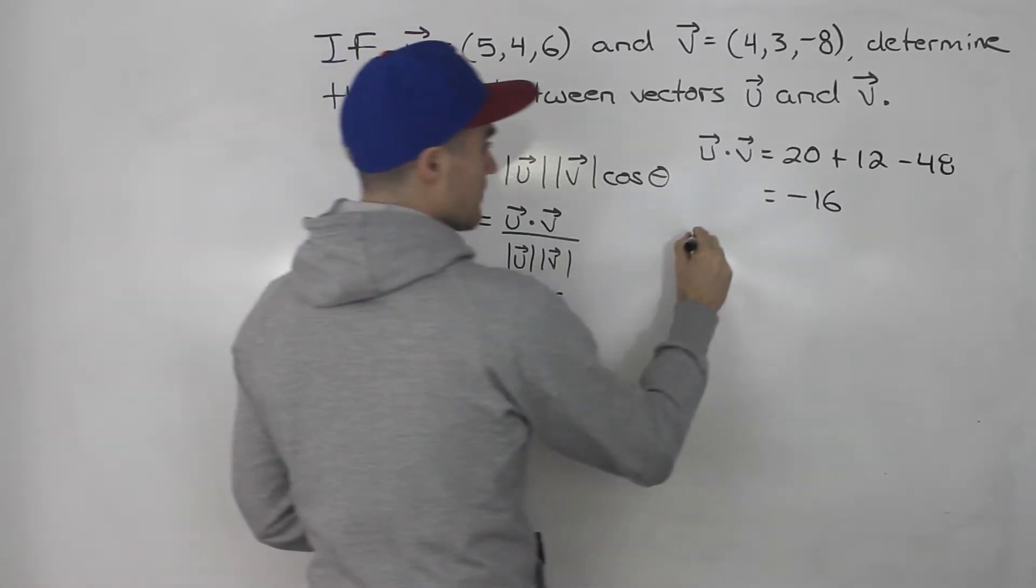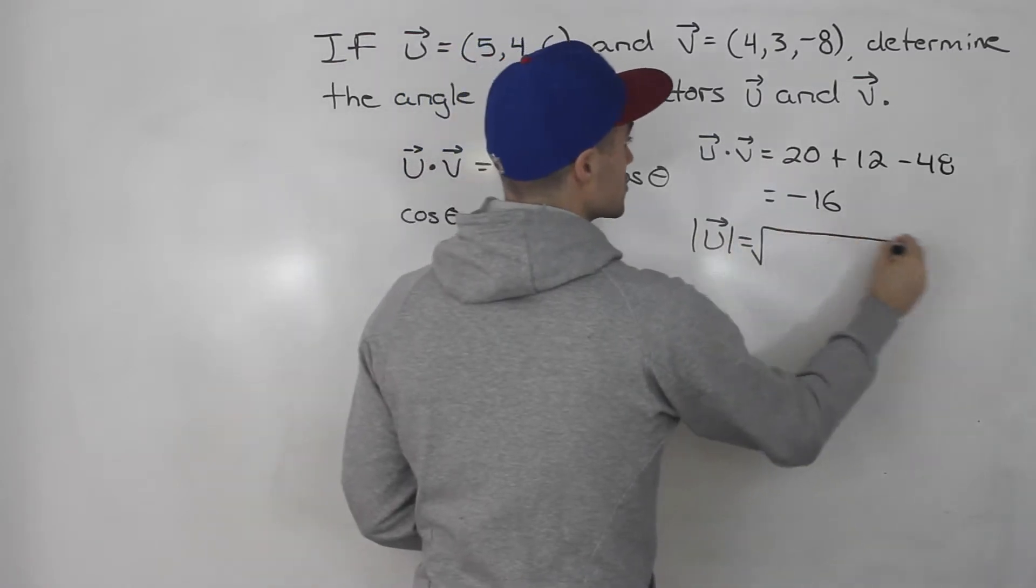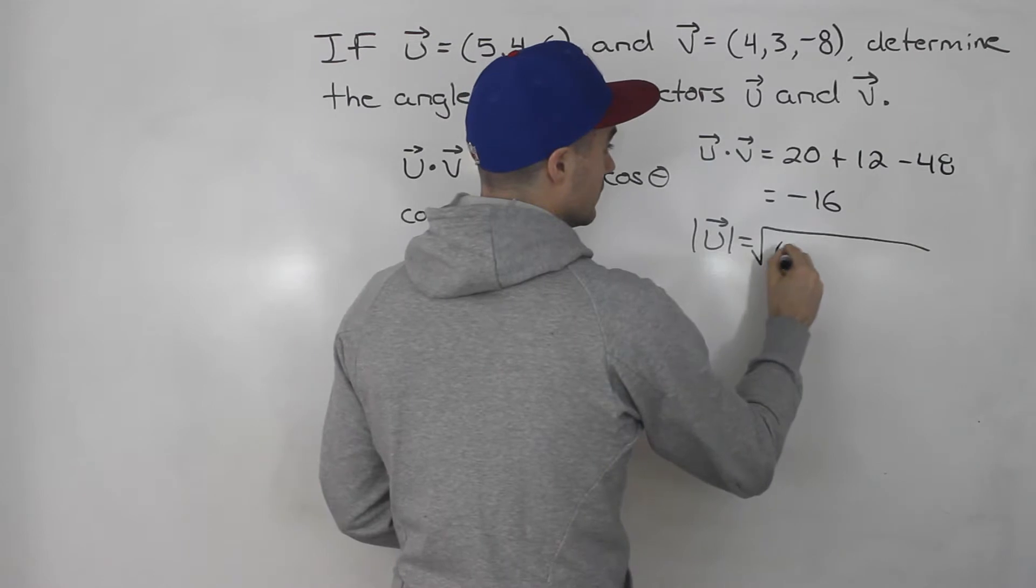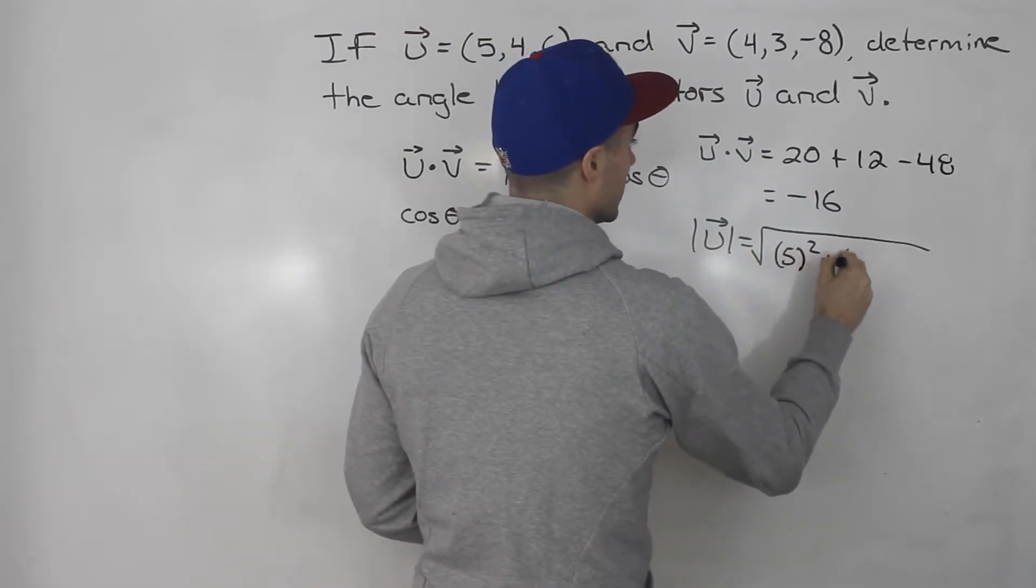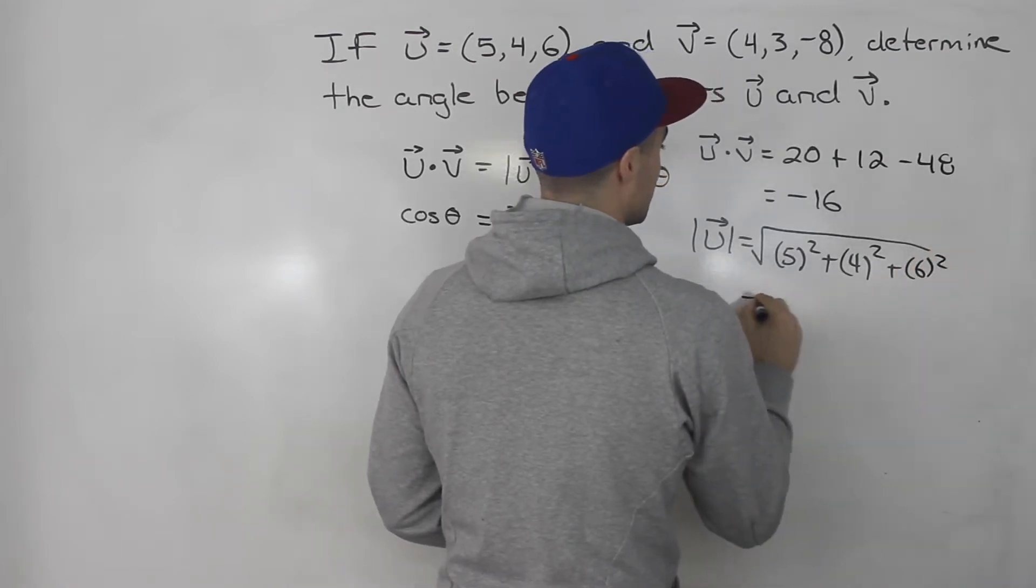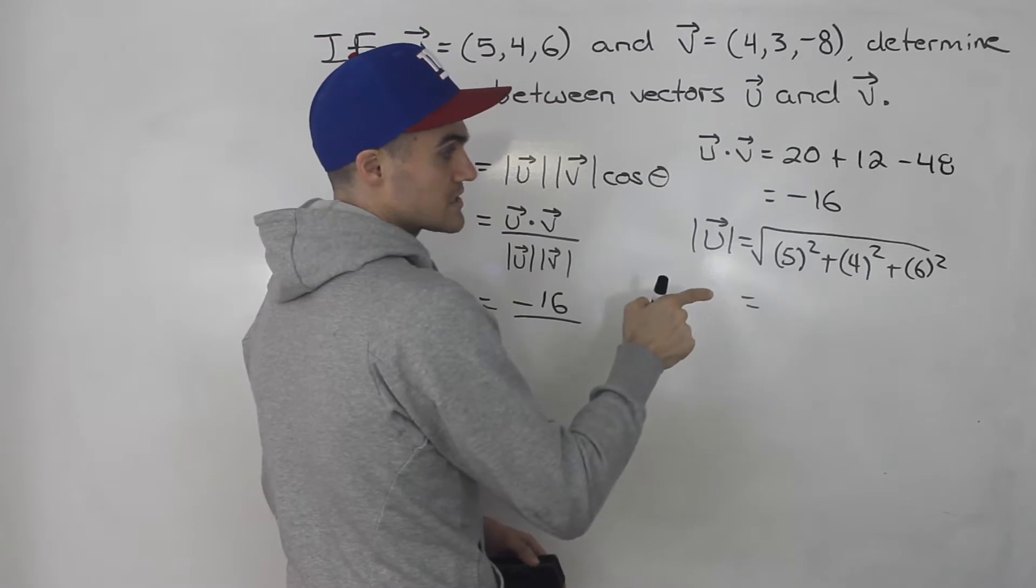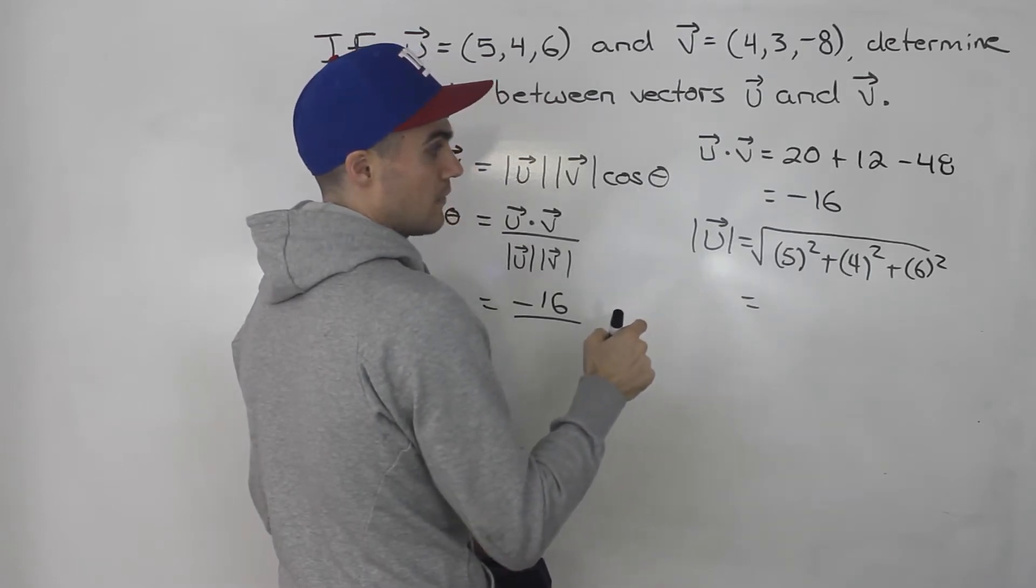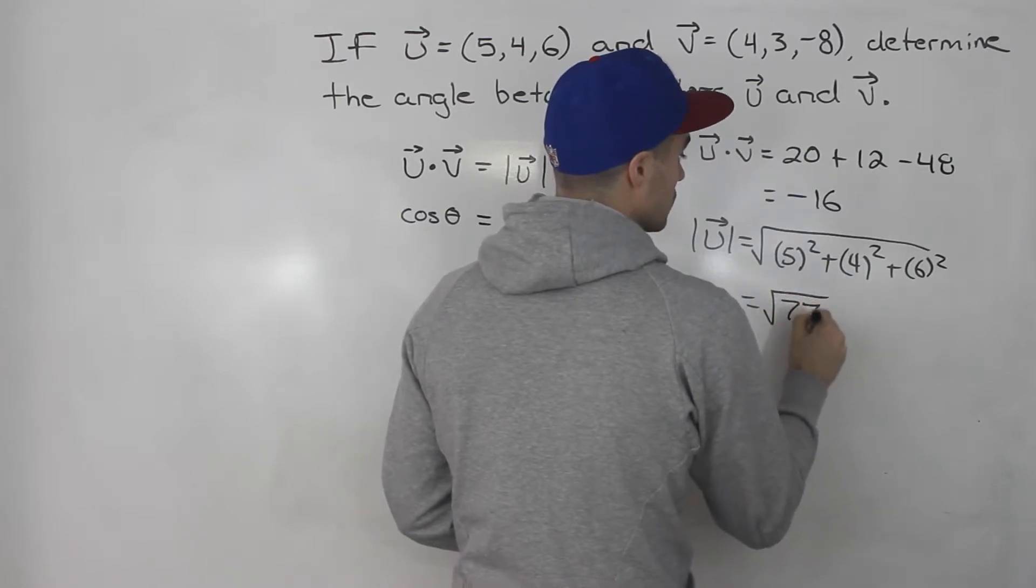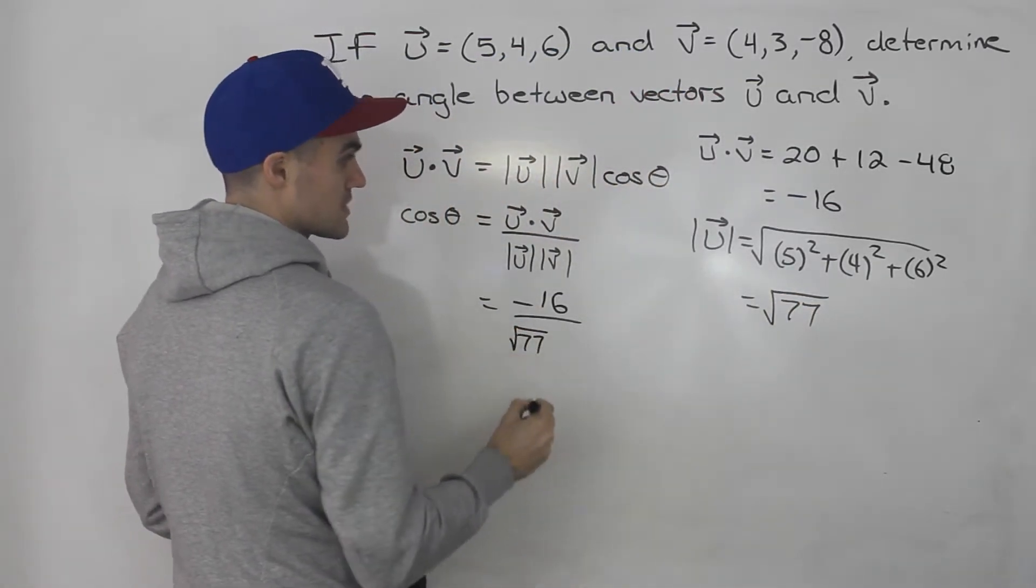The magnitude of u is going to be the square root of the x component squared plus the y component squared plus the z component squared. 25 plus 16 is 41, plus 36, that would give us 77. So the magnitude of u is the square root of 77.